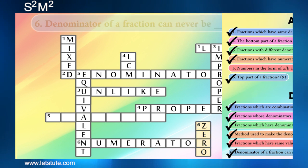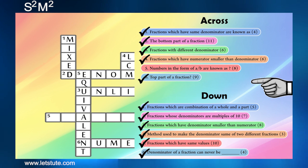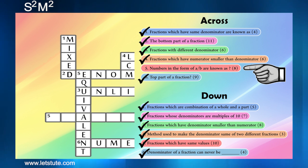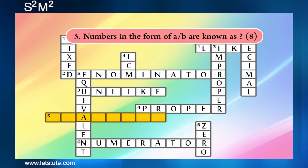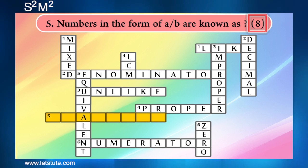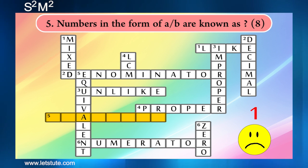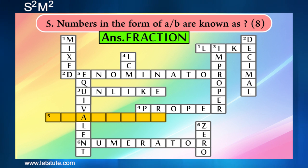And here we move to our last clue, which is the fifth one from across. And the question is numbers in the form of A by B are known as? I don't think I even have to answer this — you all know that the answer is fraction.